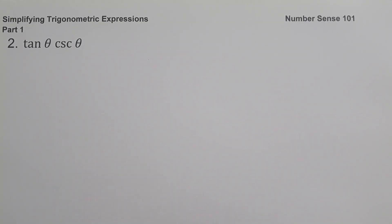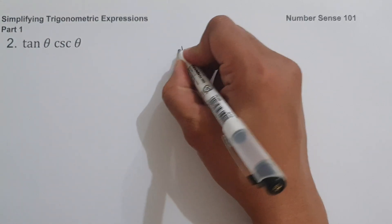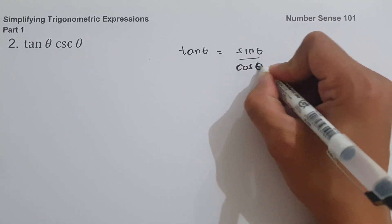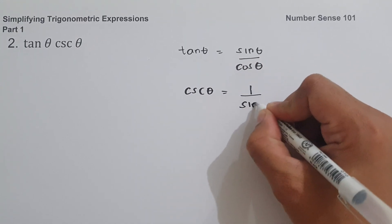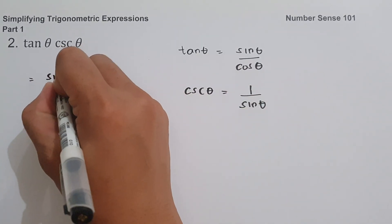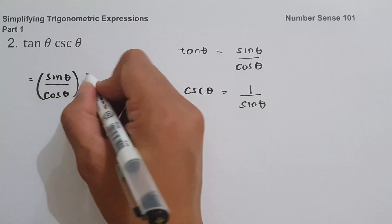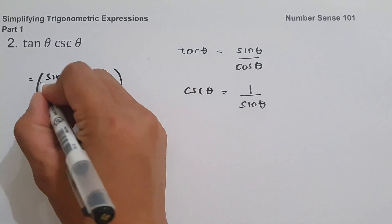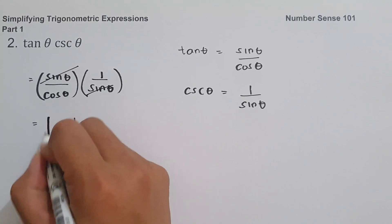On example number two, we have tan θ · csc θ. We write tan θ as sin θ/cos θ, and csc θ as 1/sin θ. Multiplying: (sin θ/cos θ) · (1/sin θ). The sin θ terms cancel, giving us 1/cos θ. That is our answer.